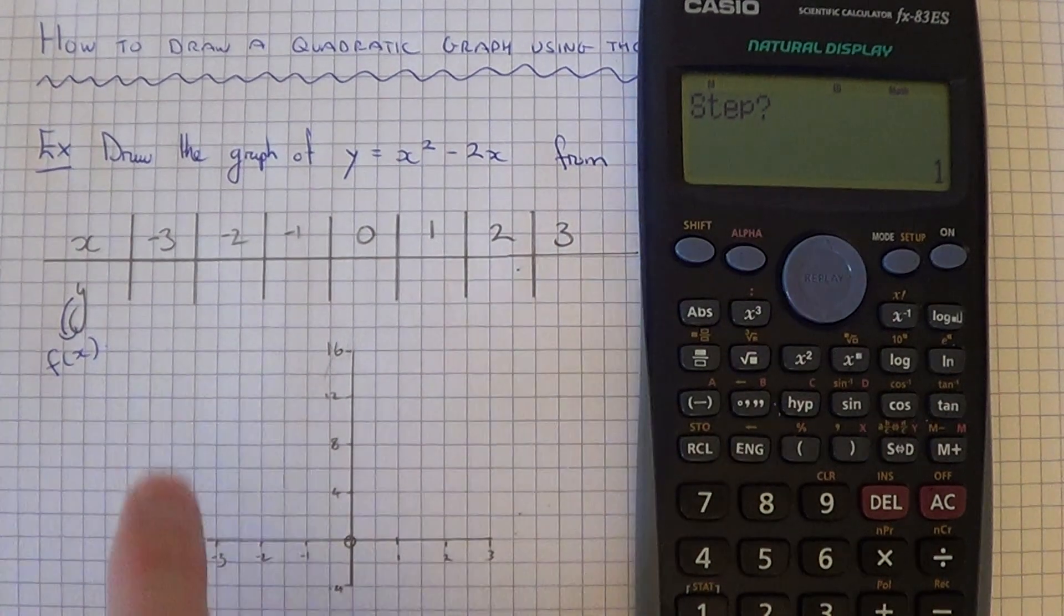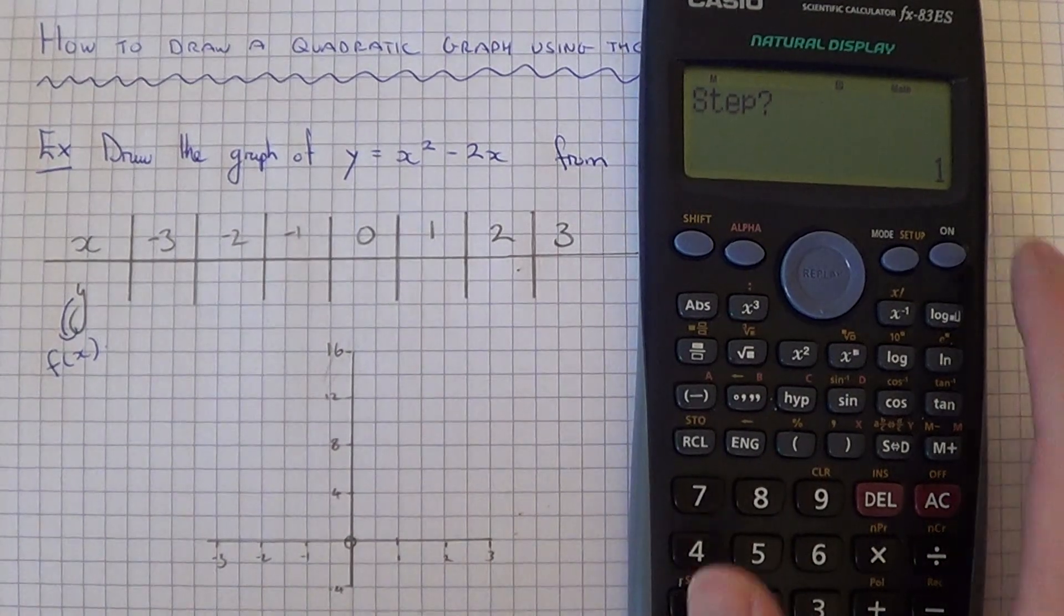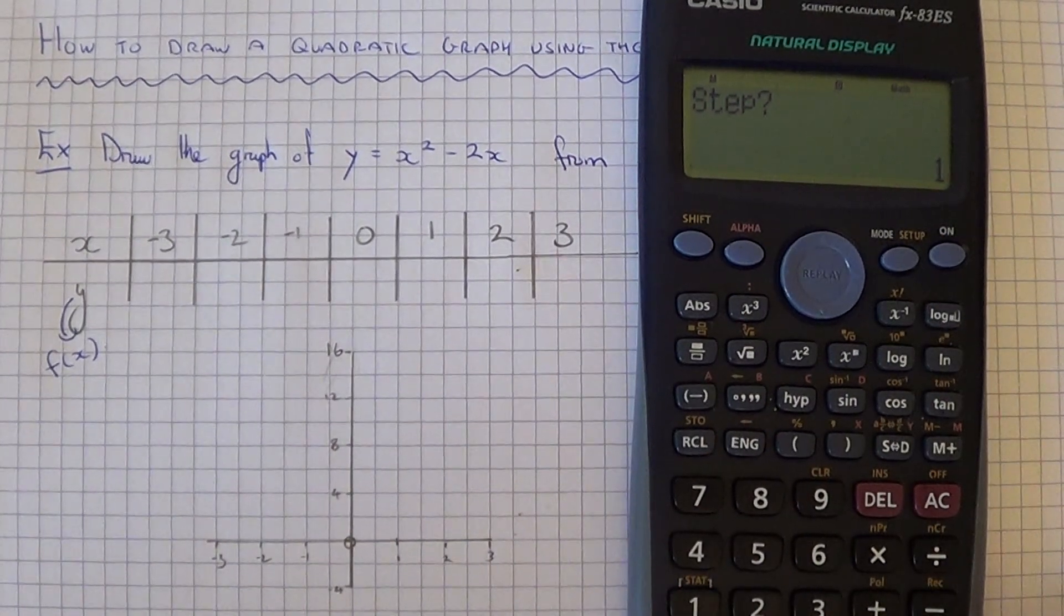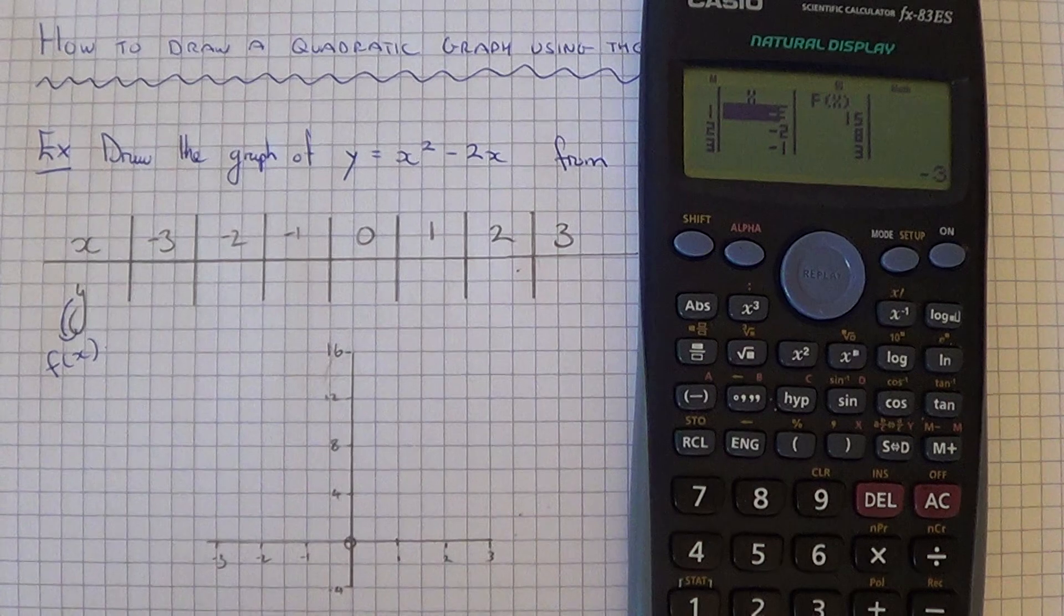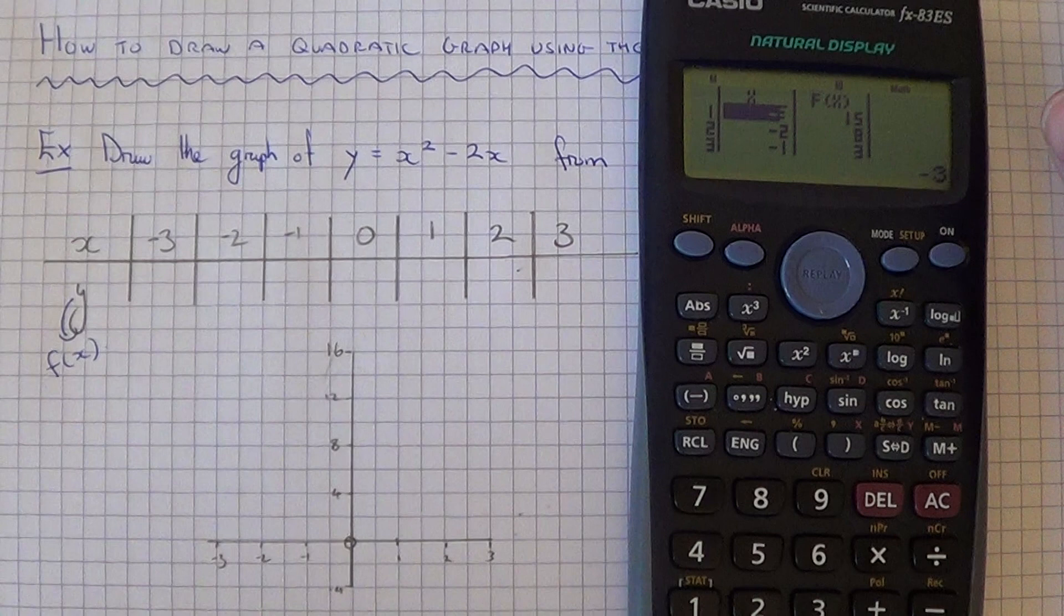The step size is what the x values are going up in. We're going up in 1s, so it's already set at 1. Just hit the equals key on that. And as you can see now, we can see the table of values which has been worked out.